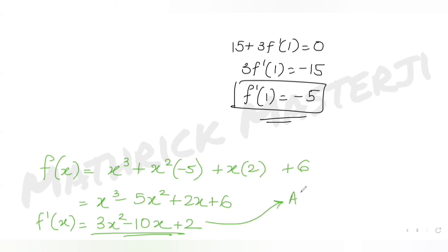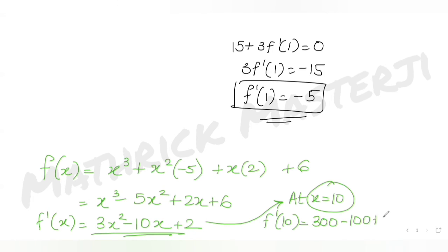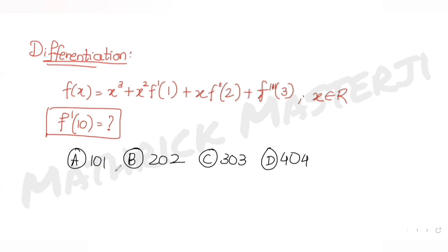The question asks for f'(10), so putting x = 10: f'(10) = 3·(10²) − 10·10 + 2 = 300 − 100 + 2 = 202. So the answer is 202, which matches option B — B is the correct answer.